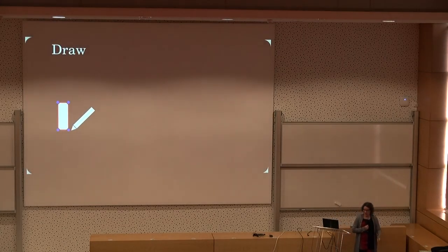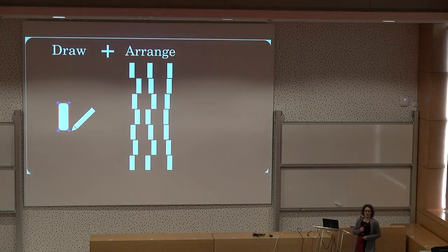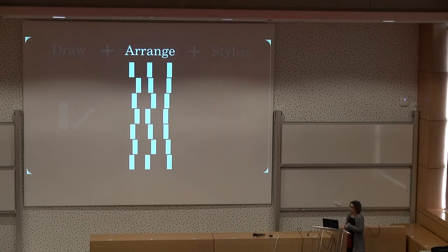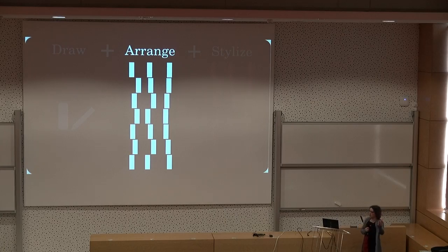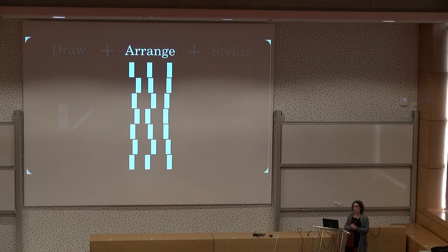When someone wants to draw an element texture, what they usually do is draw some elements to be distributed on the plane, then arrange them with certain rules, and then stylize the resulting elements. In this talk, we really focus on the arrangement part of this process. There is a lot of previous work on drawing elements or interpolating between elements, and also on stylization. So our focus is on how to let someone choose the arrangements they want.